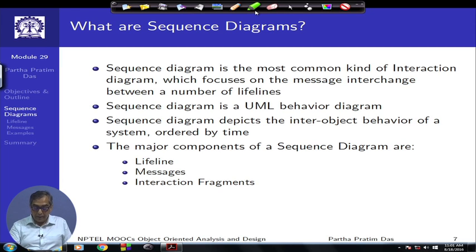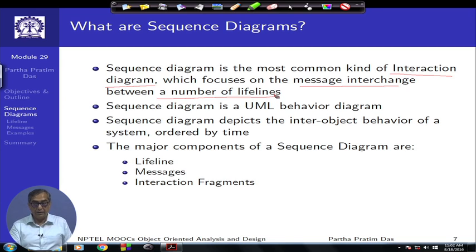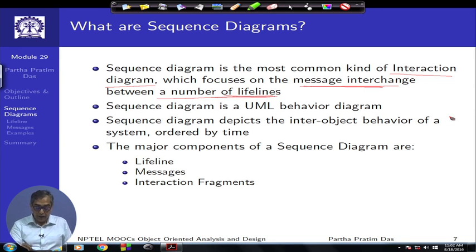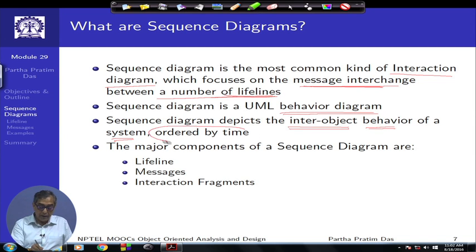Coming to what a sequence diagram is: it is the most common kind of interaction diagram, which focuses on the message interchange between a number of lifelines. These are the two key concepts we will introduce and detail. It is a behavioral diagram that tries to depict the inter-object behavior of the system, ordered by time.